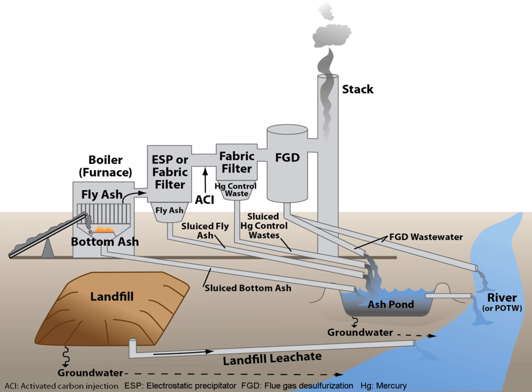Ash ponds, a type of surface impoundment, are a widely used treatment technology at coal-fired plants. These ponds use gravity to settle out large particulates measured as total suspended solids from power plant wastewater. This technology does not treat dissolved pollutants. Power stations use additional technologies to control pollutants, depending on the particular waste stream in the plant.